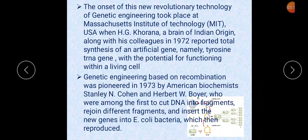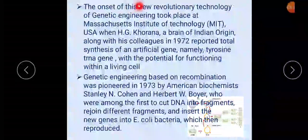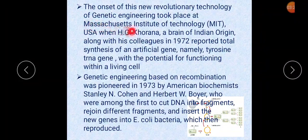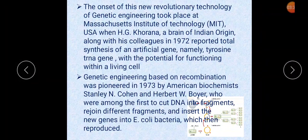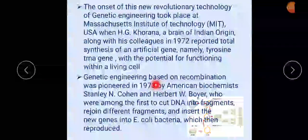The onset of this new revolutionary technology took place at Massachusetts Institute of Technology when HG Khurana, a scientist of Indian origin, along with his colleagues in 1972 reported the total synthesis of an artificial gene — namely the tyrosine tRNA gene — with the potential for functioning within a living cell. Genetic engineering based on recombination was first pioneered in 1973 by American biochemist Stanley N. Cohen and Herbert W. Boyer.